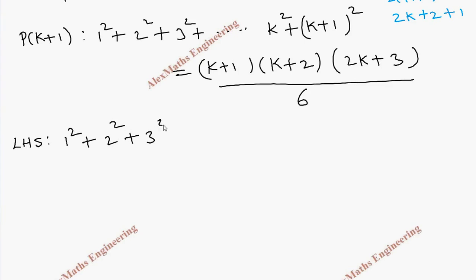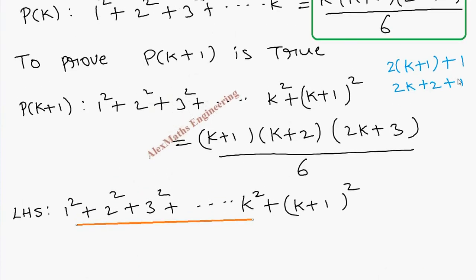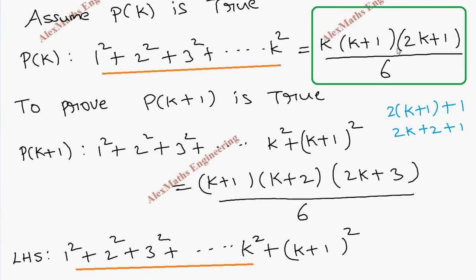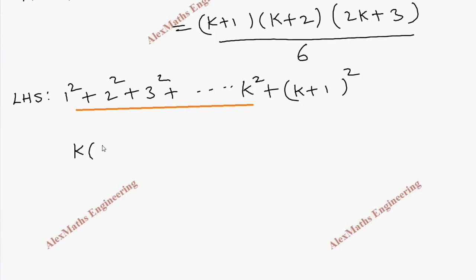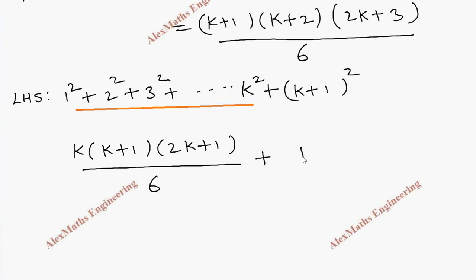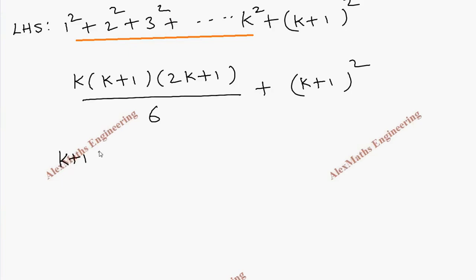Now we work on the LHS of P(k+1): 1² + 2² + 3² + ... + k² + (k+1)². From our assumption P(k), the sum 1² + 2² + ... + k² equals k(k+1)(2k+1) divided by 6. So we substitute that, giving k(k+1)(2k+1)/6 + (k+1)². From both terms we can factor out (k+1) as a common factor.